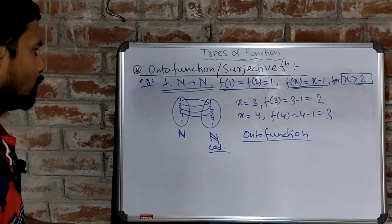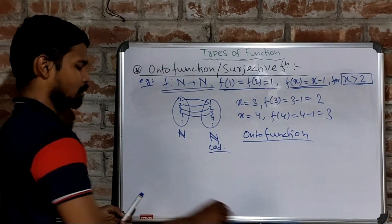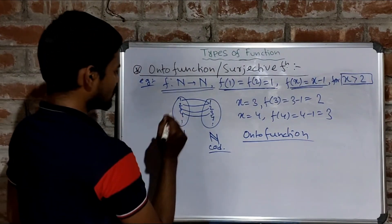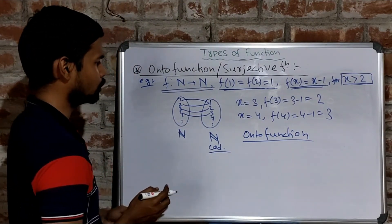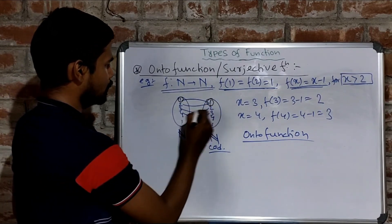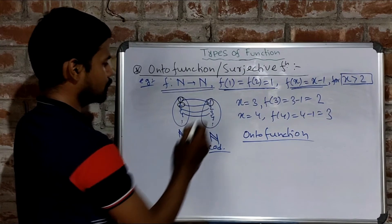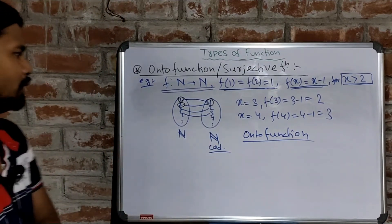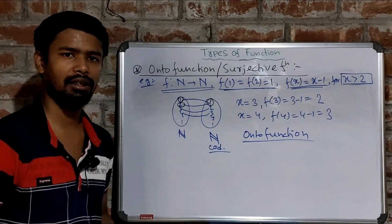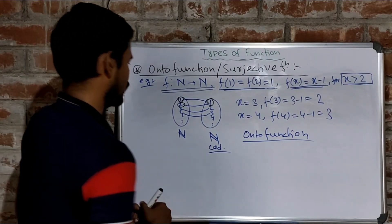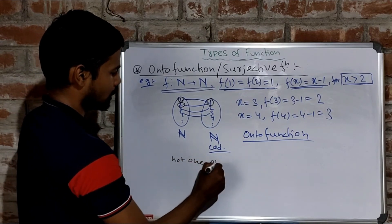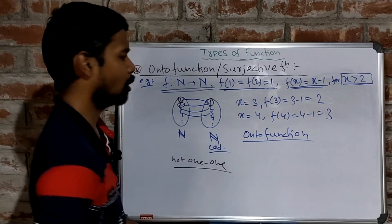Look at the function carefully. In the diagram, 1 maps to 1 and 2 maps to 1 also. So by the definition of one-one function, this function is not one-one. But this is an example of an onto function.